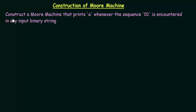Here is our task: construct a Moore machine that prints 'A' whenever the sequence 01 is encountered in any input binary string. We have done this same example for Mealy machine as well, so let's see how we can design the Moore machine for this task.